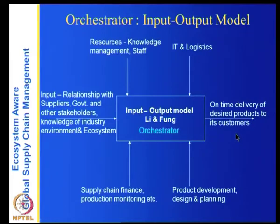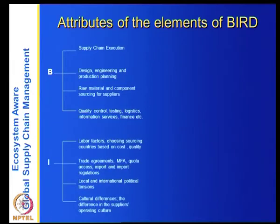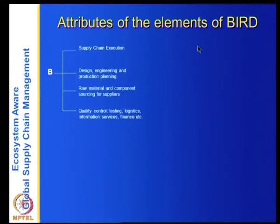You can closely see what kinds of things are involved. The inputs required are inputs for any orchestrator. Looking at B — the business or service chain — it includes design engineering and production planning, raw material and component sourcing from suppliers, quality control testing, logistics, information services and finance, and finally supply chain execution.